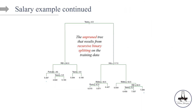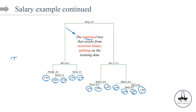Now let's apply this cost complexity pruning method to our baseball player salary example, borrowed from the ISLR textbook. This is the unpruned tree that results from recursive binary splitting on the training data. We impose a stopping criterion: each terminal node should not contain fewer than 10 observations. This unpruned tree has 12 terminal nodes — 1 through 12 — and a depth of 4, meaning potentially 2 to the power of 4 = 16 terminal nodes, but we end up with 12 due to the stopping criterion.